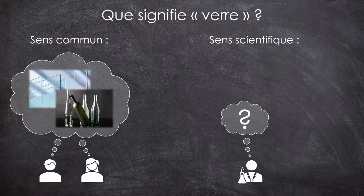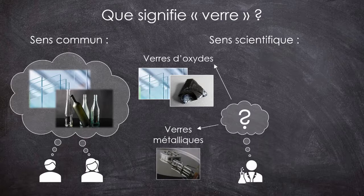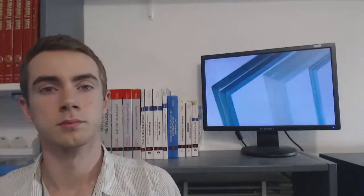On peut avoir des verres d'oxyde, comme le verre à vitre ou certaines roches, des verres métalliques, des verres organiques, comme le polycarbonate des lunettes, ou même le caramel, qui est un verre de sucre, ou encore des verres de spin. Du coup, comment se définit un verre si ce n'est pas par sa composition, contrairement à ce que peut laisser penser le dictionnaire ? Eh bien, revenons sur cette notion d'amorphe.